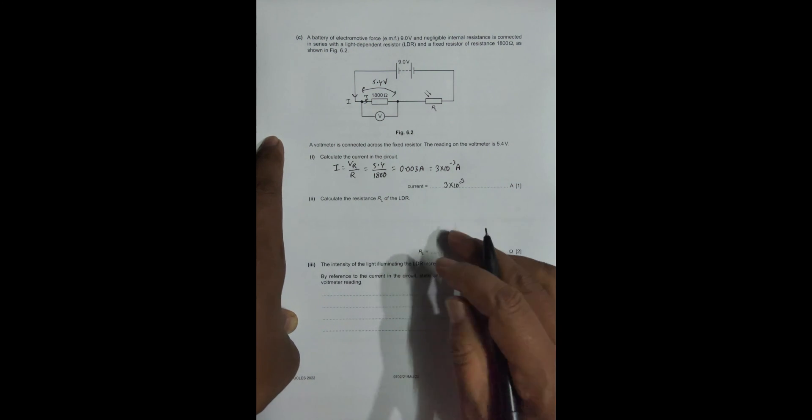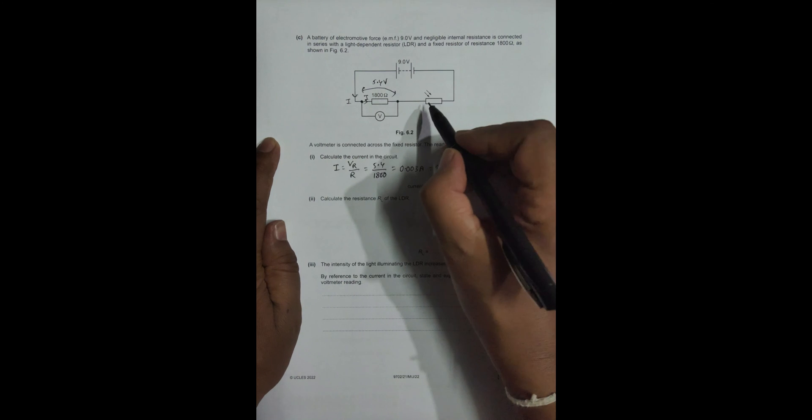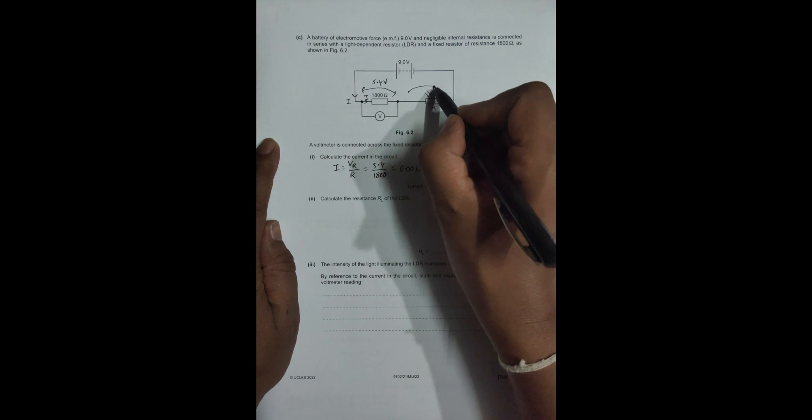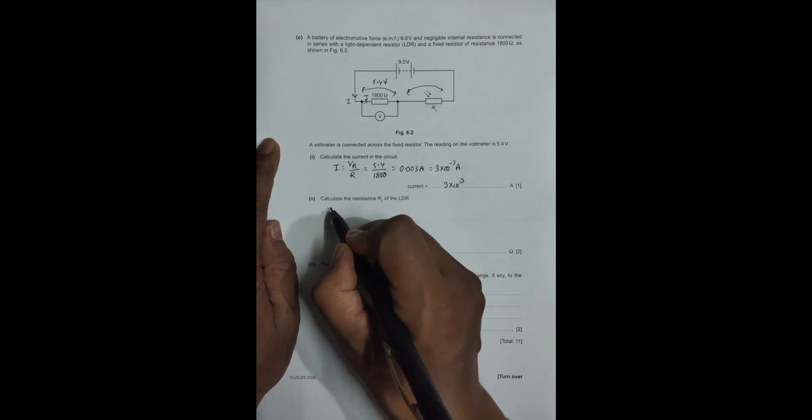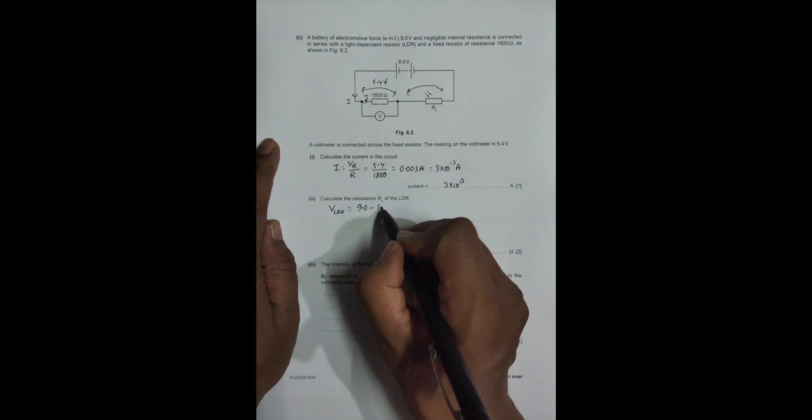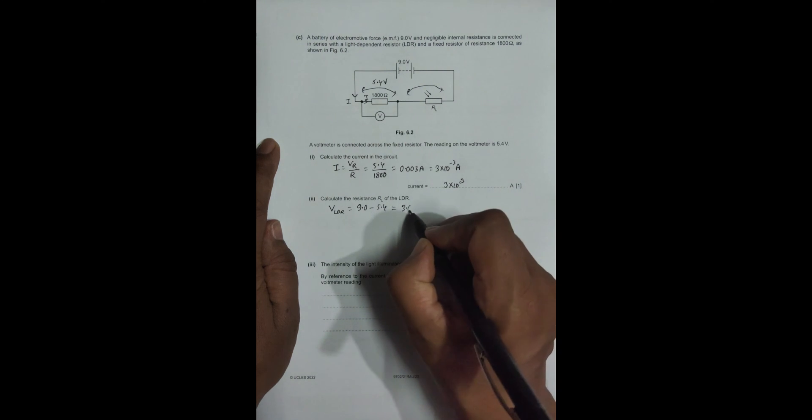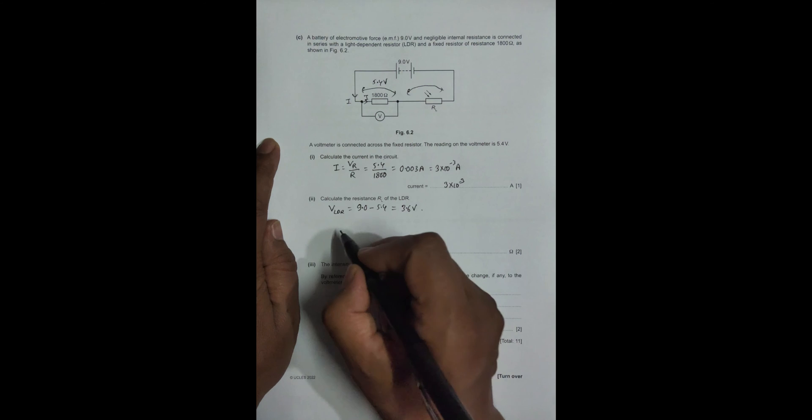Calculate the resistance RL of the LDR. If this voltage is 5.4 volt, then VLDR should be equal to 9.0 minus 5.4 volt, which equals 3.6 volt.